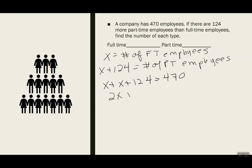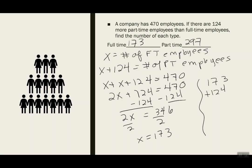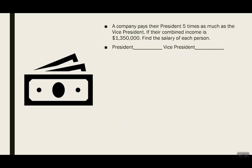x and x is 2x, plus 124 equals 470. I'm going to subtract 124, which gives me 346. Divide by 2, so x is 173. Remember — 173 is the number of full-time employees, so I have 173 full-time. Now to get the number of part-time, I do 173 plus 124, which gives me 297 part-time employees.